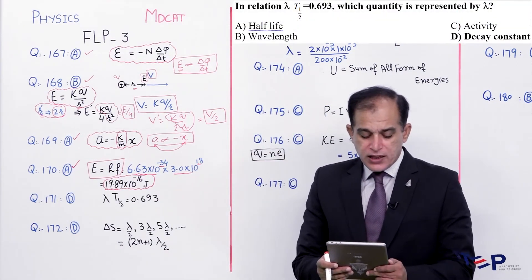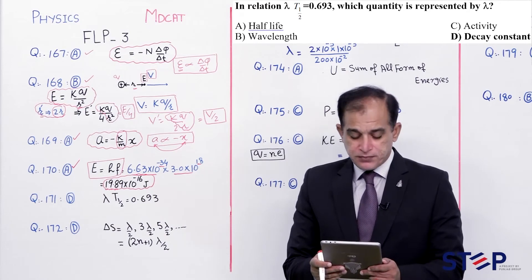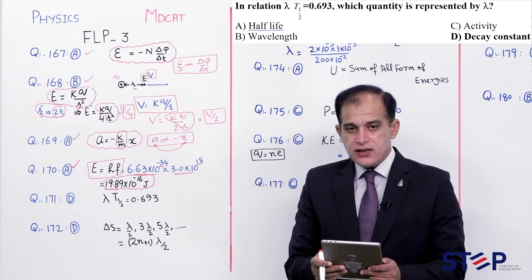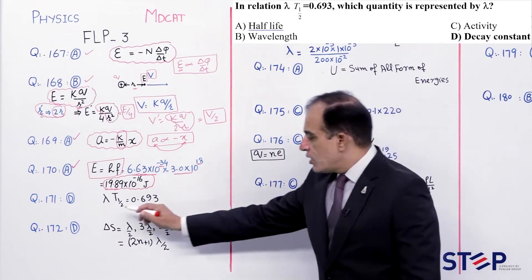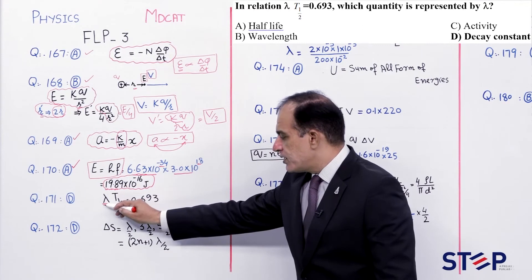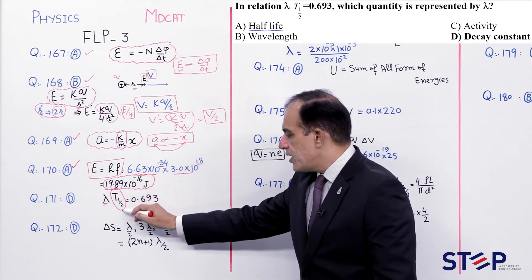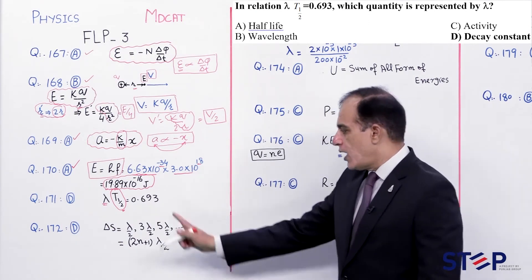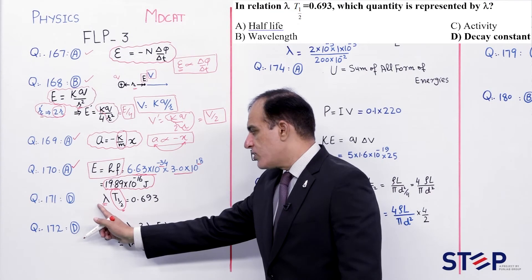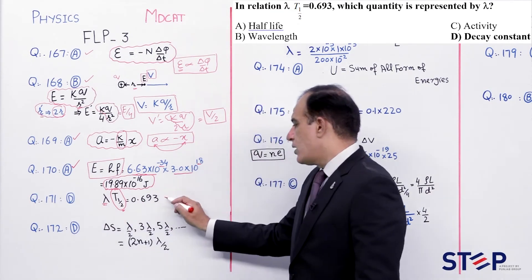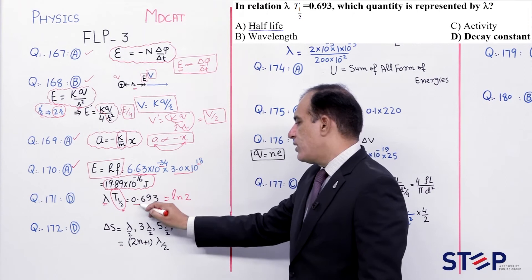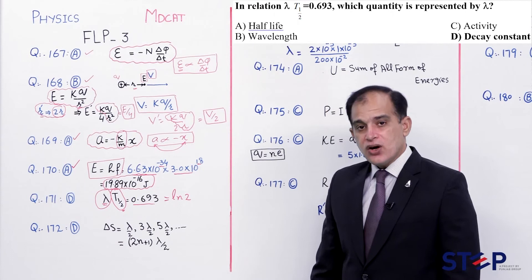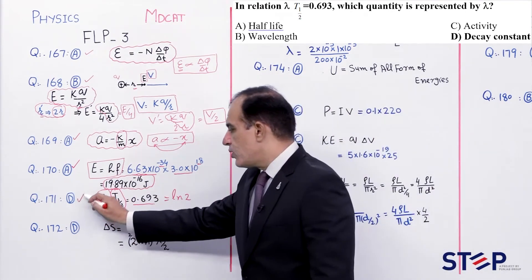Question number 171: In the relation λ × t½ = 0.693, what does λ represent? Half-life (t½) ke saath jab decay constant multiply karte hain to answer log(2) = 0.693 aata hai. Toh λ decay constant ki representation hai. Correct option: Delta.